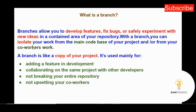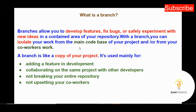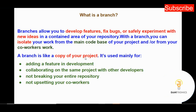With a branch you can isolate your work from your main codebase and from your co-workers. It's a way of isolating your master codebase from whatever changes you want to make, so it doesn't corrupt what you have there — you leave that intact. A branch is like a copy of your project; it copies your main code area into a new location within your repository.